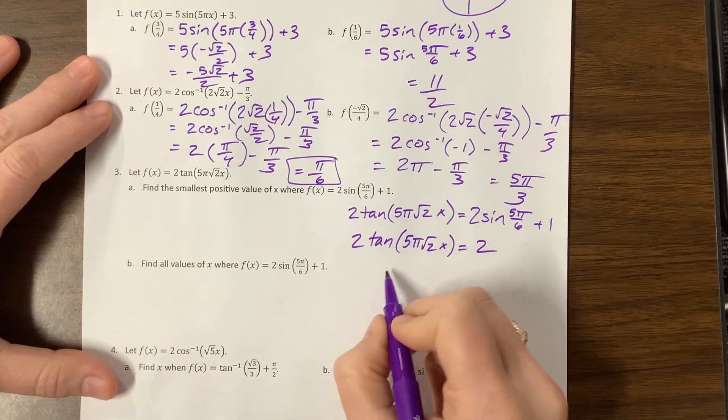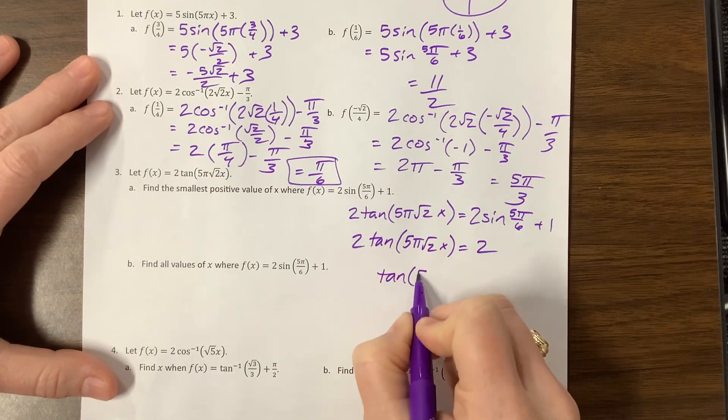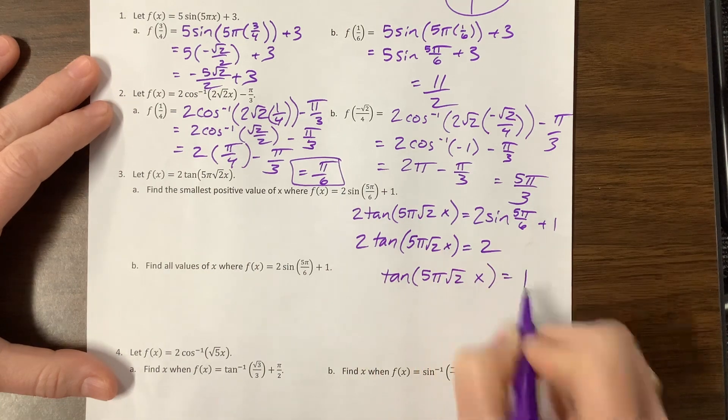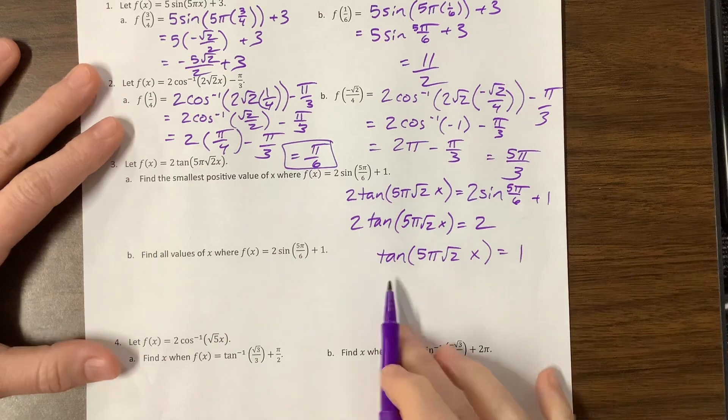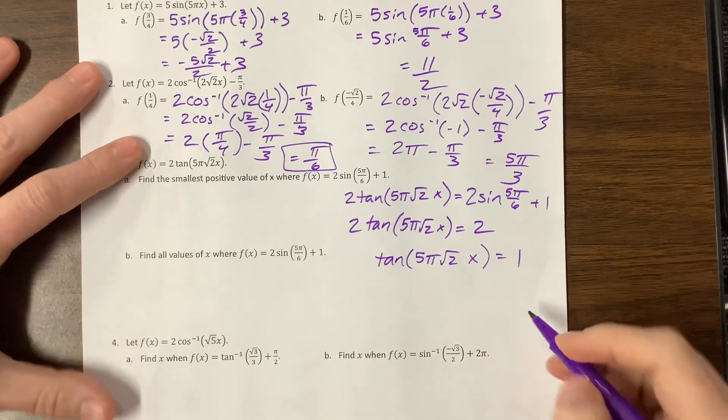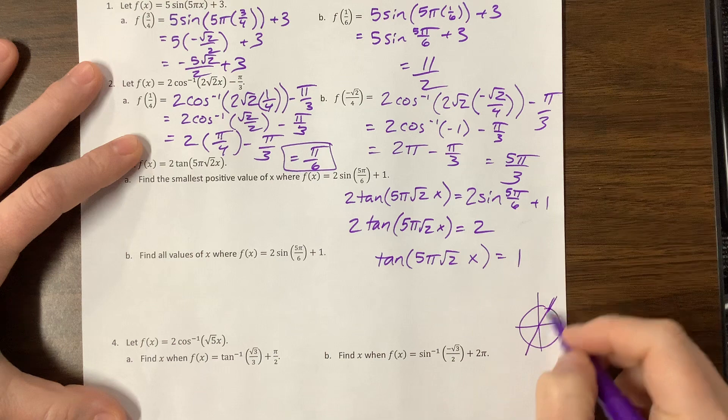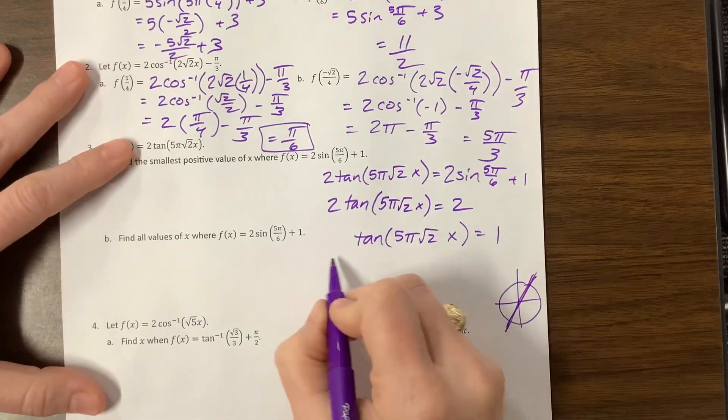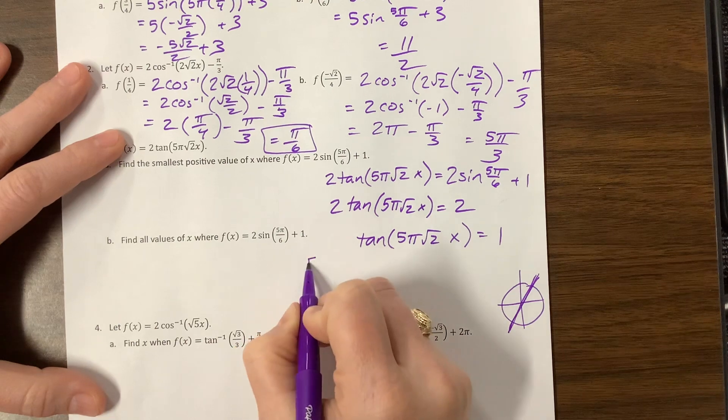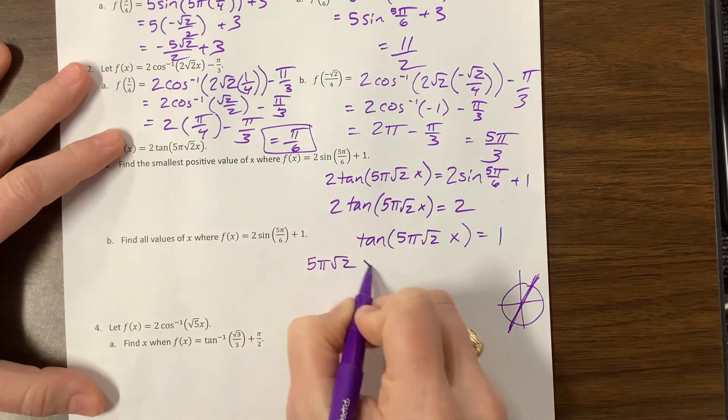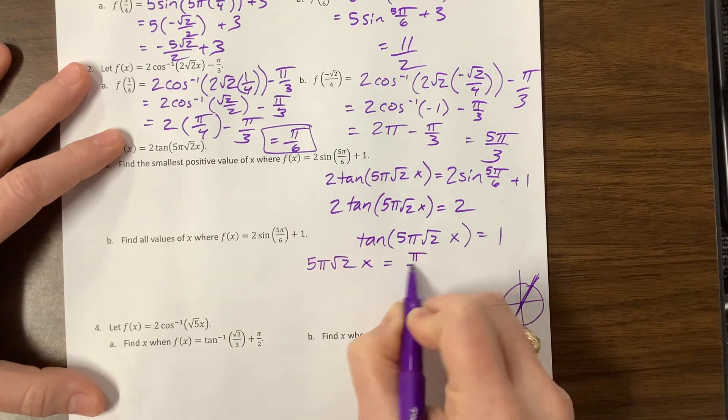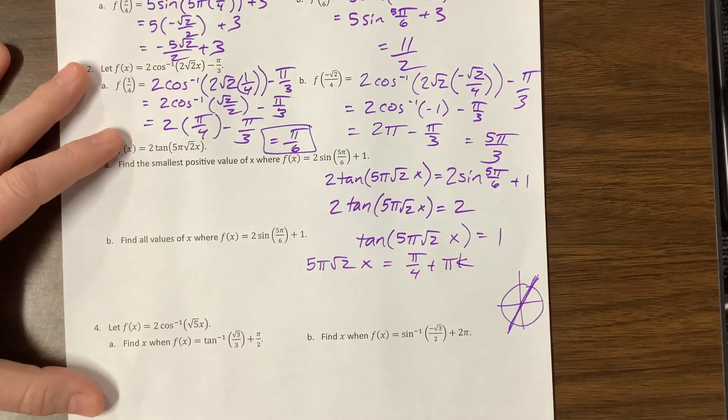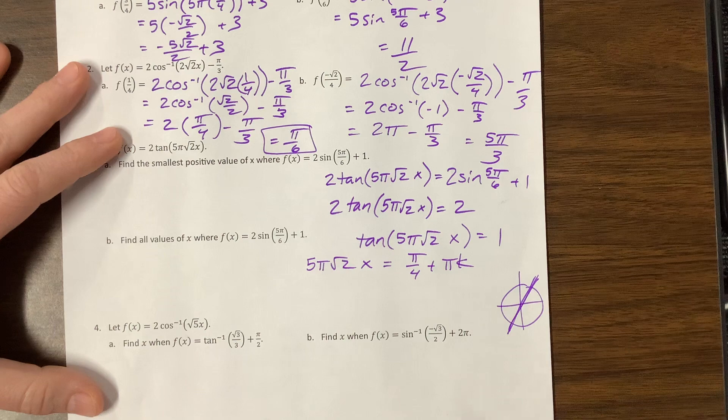Divide by 2 and I get 1. So now I have tangent of 5π√2 times x equals 1. We know that tangent equals 1 on our unit circle. It's that slope of 1, that's the π/4 family. So it's π/4 plus πk. And so the find all would mean this 5π√2 times x is going to be equal to π/4 plus πk, the most efficient way to write out our problem.